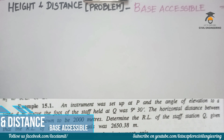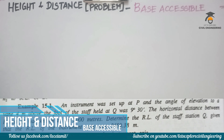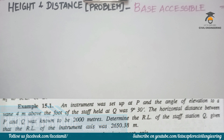In this video, we will find a problem in height and distance. The first condition is Base Accessible. The distance can be measured manually. When the base is accessible, we can access the distance directly.